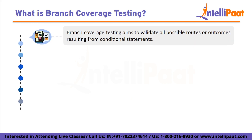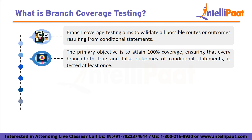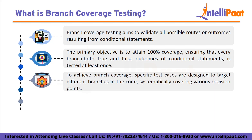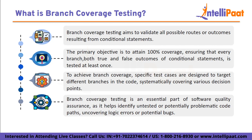It ensures that all possible routes or outcomes resulting from conditional statements are tested. The goal of branch coverage testing is to achieve 100% coverage, meaning every potential branch — both true and false outcomes of conditional statements — should be tested at least once. In practical terms, this involves creating specific test cases designed to target different branches in the code. These test cases are executed to verify that each branch functions as expected, helping identify untested or potentially problematic code paths and covering logical errors or potential bugs.